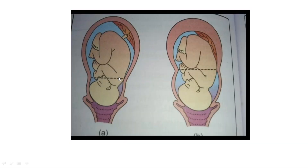There is a normal retraction ring — the demarcation between the contracting and retracting upper uterine segment and the dilating and thinning lower uterine segment — which we normally cannot see. In obstructed labor, with obstruction in the passage or passenger, as the demarcation between upper and lower uterine segments rises, the groove is not exactly circular — it is usually oblique because of dextrorotation of the fetus, stretching from one round ligament to the other in an oblique manner.